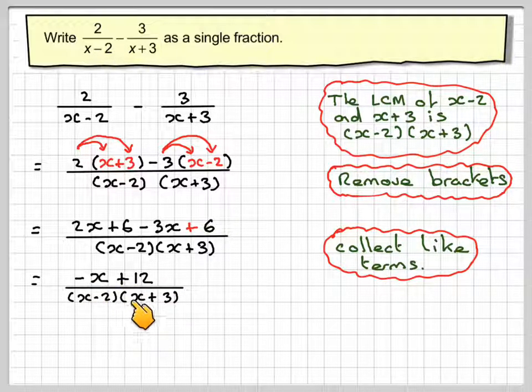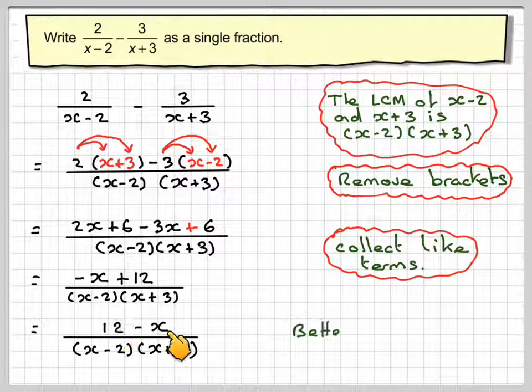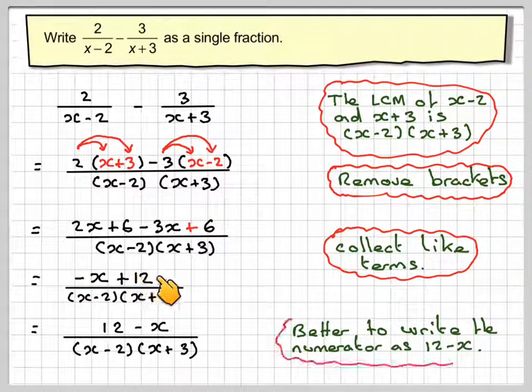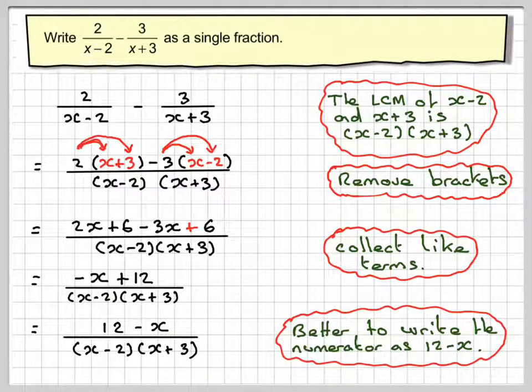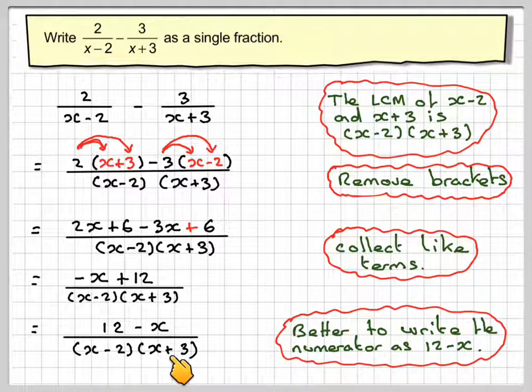Now this could be considered to be the right answer. However, it might be better to write the numerator as 12 minus x, i.e. swapping that one with that one. And then we get 12 minus x over x minus 2 times x plus 3.